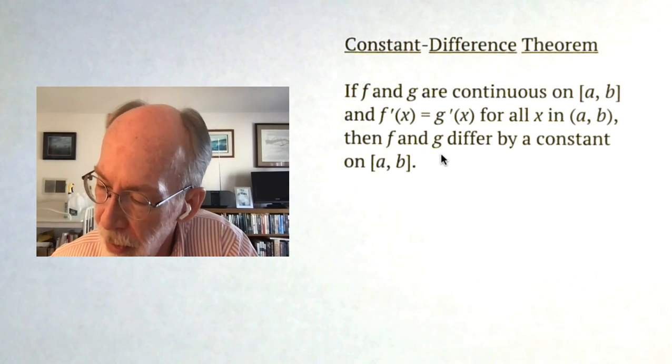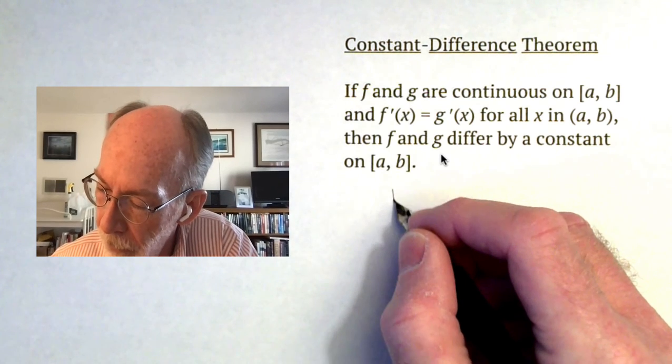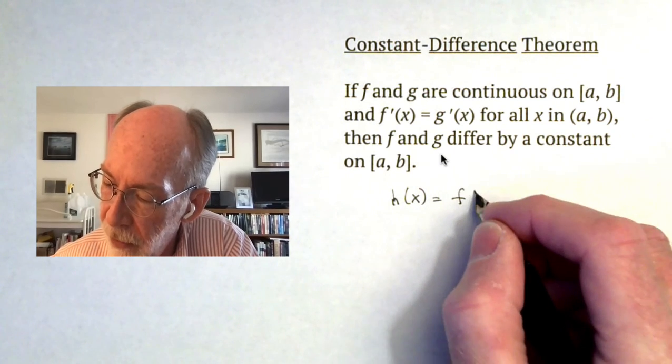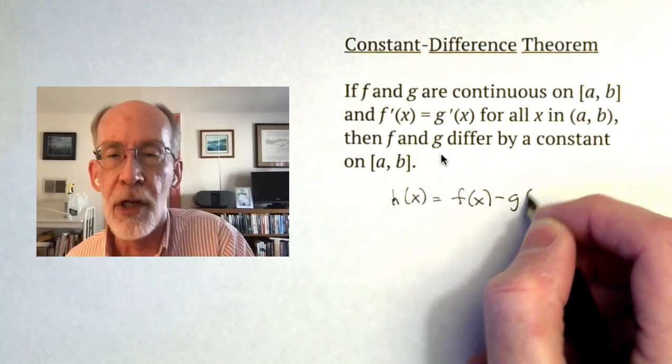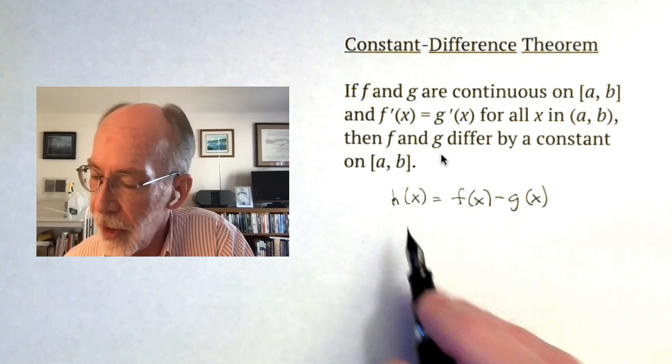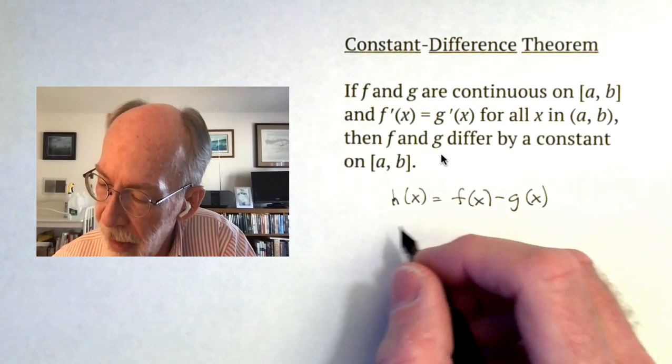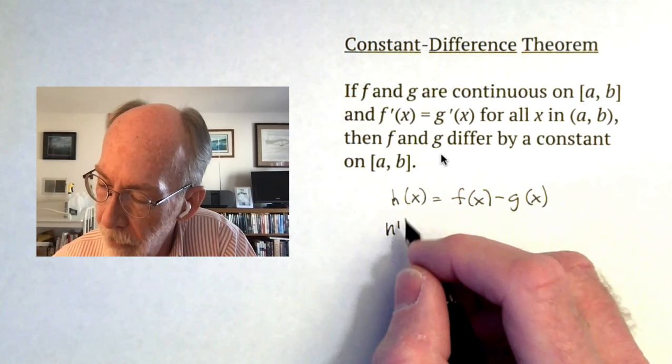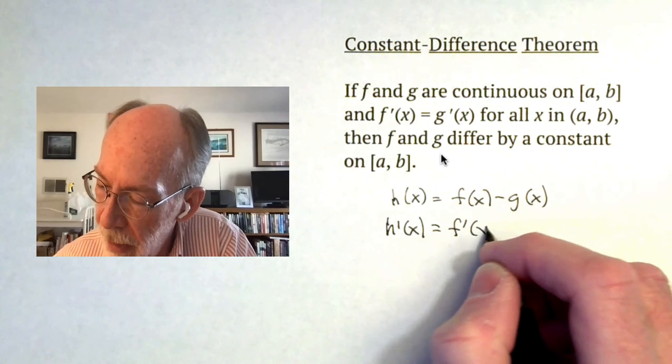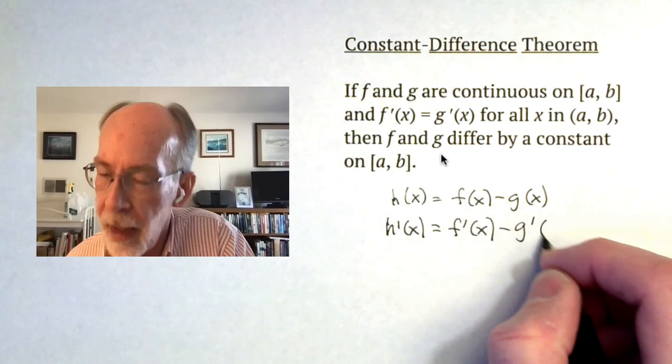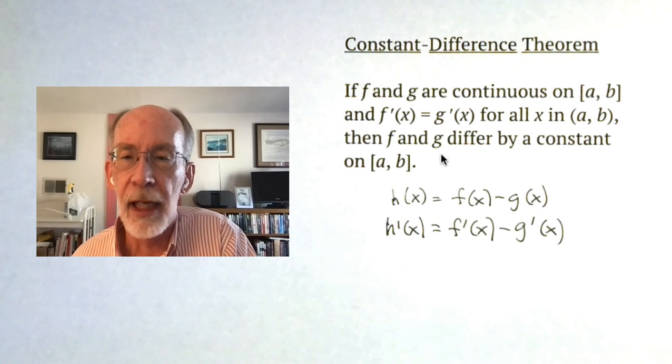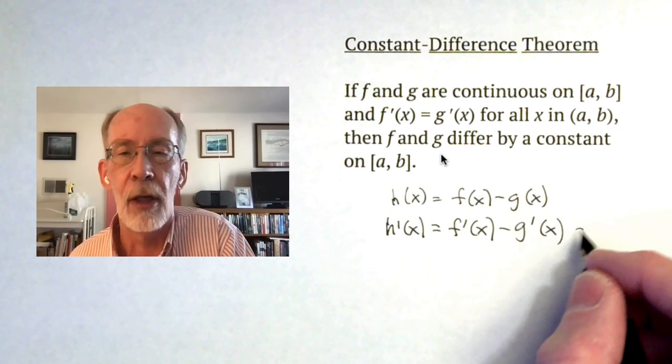And the way we're going to approach this is to create a function h that is the difference between f and g. If I then differentiate through on both sides, I get that h prime is equal to f prime minus g prime. But on open AB, we've assumed that f prime and g prime are equal, which means this is zero.